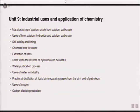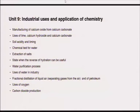Unit 9 is about industrial uses and application of chemistry. It's straightforward but still important. You need to understand how calcium reacts with calcium carbonate, how lime, calcium hydroxide and calcium carbonates are used, acidity of soil and how it can influence crops and liming, and how to test for water using the chemical test. Also understand the extraction of salts, hydration, water purification, the use of water in industry, the use of oxygen and how carbon dioxide is produced.